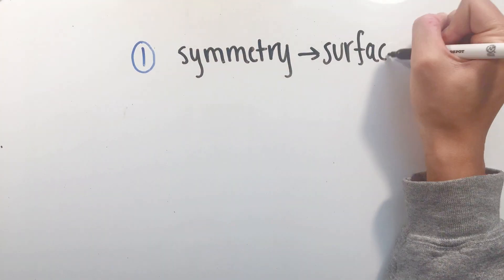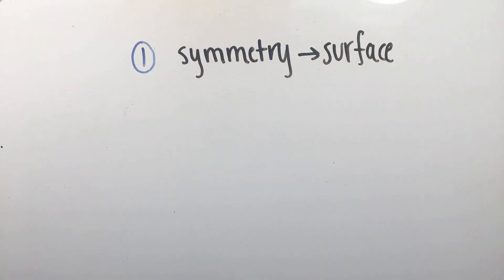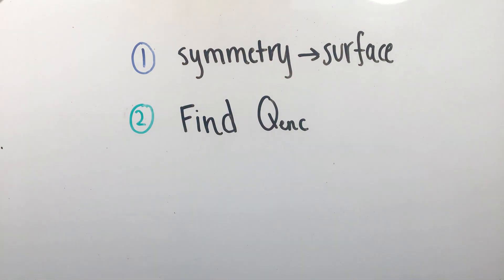For any Gauss's law question you may encounter, there's a simple three-step process to solving for the electric field due to a charge distribution. First, determine what type of symmetry the charge distribution has, and draw the most convenient Gaussian surface based on that geometry. Second, calculate the charge enclosed in terms of the givens of the problem, as well as the dimensions of the Gaussian surface you drew, which you may have to make up some variables for.